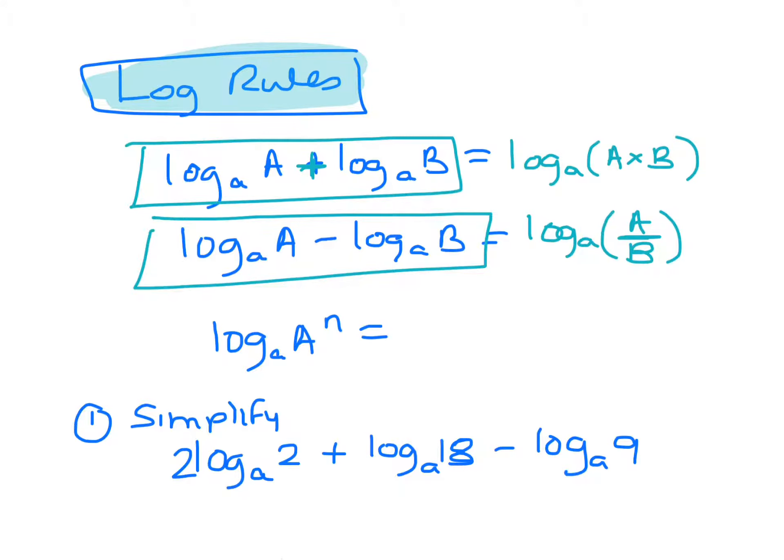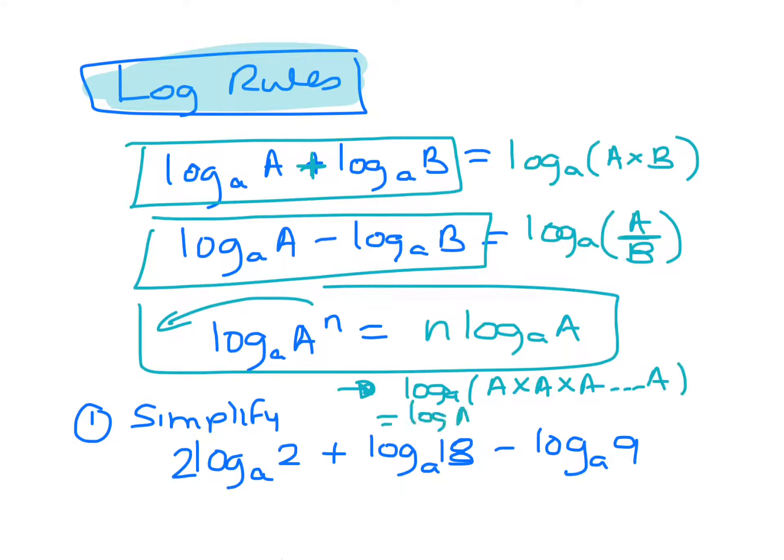Now when you have a power like this, you can bring the number down to the front. Now the reason that happens is it's basically following the multiplication rule because you've got a times a times a and you're doing that n times, so that means you've got to add them up because you're adding the indices.